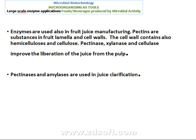Enzymes are also used in fruit juice manufacturing. Pectins are substances in fruit lamella and cell walls. The cell wall also contains hemicellulose and cellulose. Pectinase, xylanase, and cellulase improve the liberation of juice from the pulp. Pectinase and amylases are used in juice clarification.